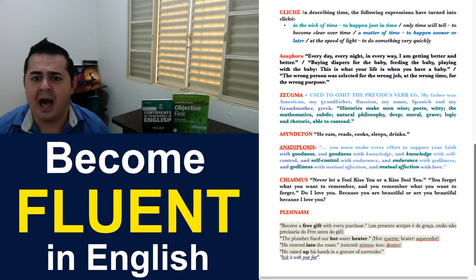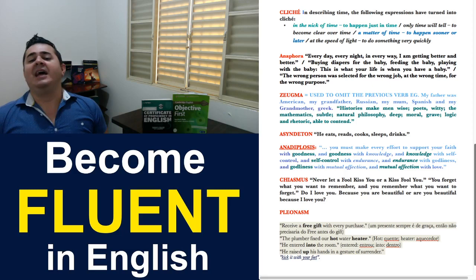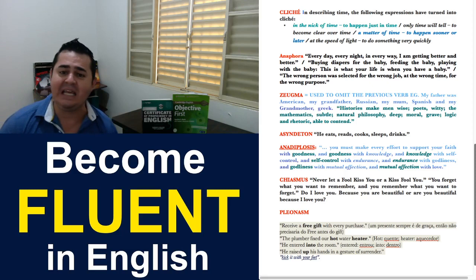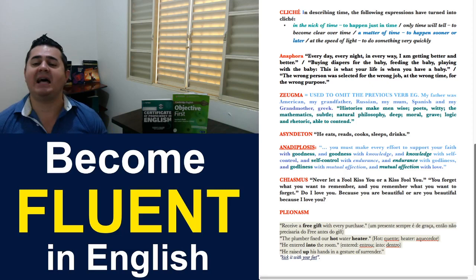Second example: Buying diapers for the baby. Feeding the baby. Playing with the baby. This is what life is when you have a baby. Again, we're repeating baby, baby, baby, baby deliberately. And the last example: The wrong person was selected for the wrong job at the wrong time for the wrong purpose. So, again, I use the adjective wrong repeatedly. And that's called in English anaphora. We did that on purpose.